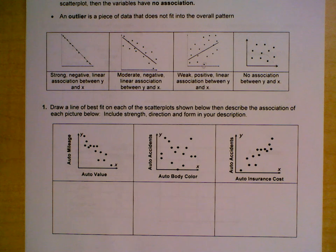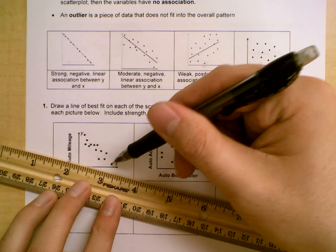So remember your line of best fit. Usually what I do is I pick two dots, and then I try and pick the two dots that most clearly represent the association. So for example, in this first one, if I pick these two outside dots here, do you think that this is a very good representation of the data?